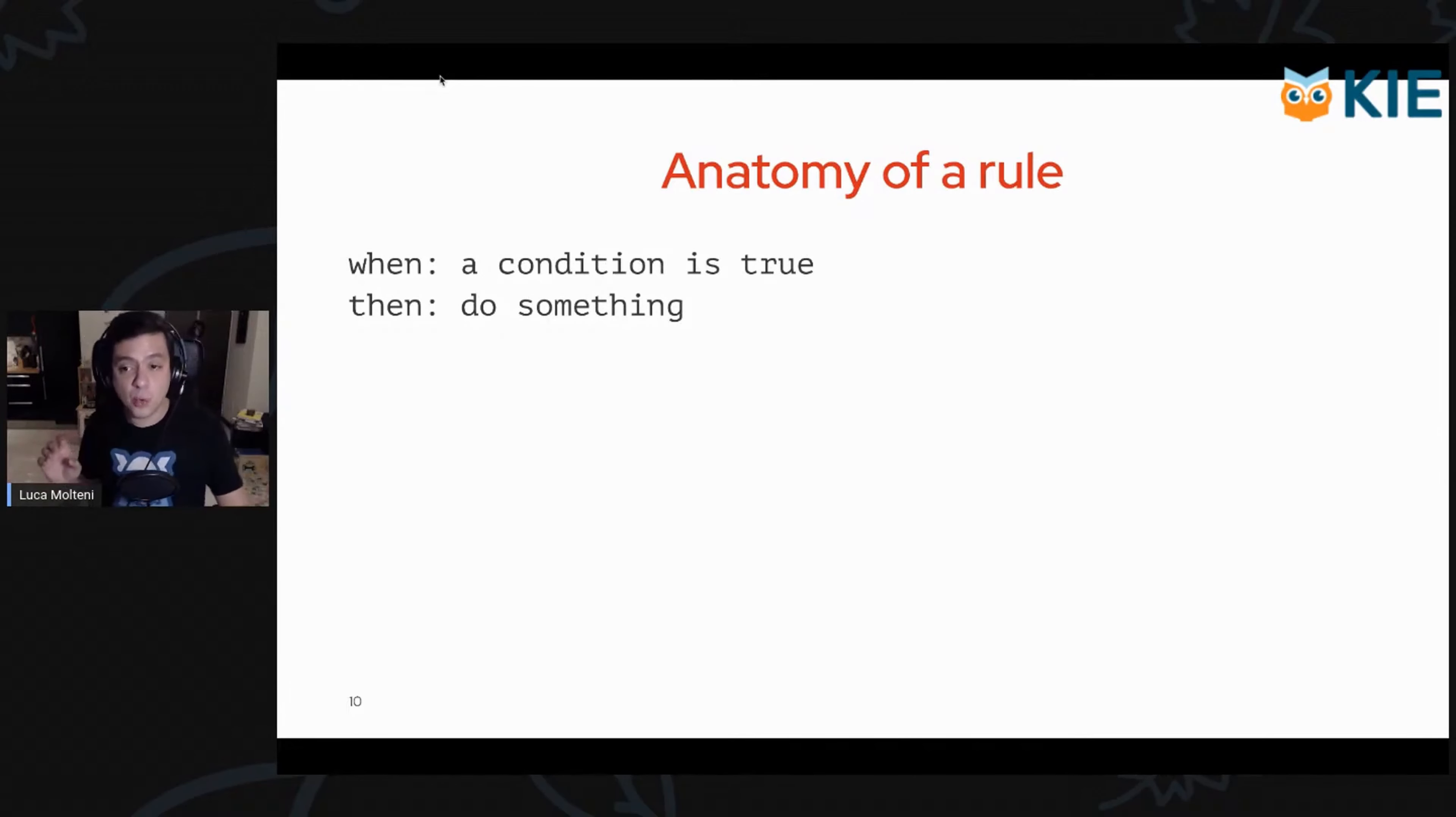The when part defines when the rule will fire, while the then part defines what the rule actually does. The when part in Drools is based on a concept called pattern matching, a mechanism used to see if the input object matches the pattern we provide.